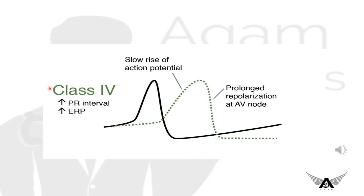Class 4 deals with the slow response action potential. Class 4 increases the PR interval and also increases the ERP. The graph shows a slow rise of action potential in phase 4 and prolonged repolarization at the AV node.